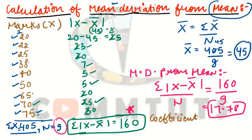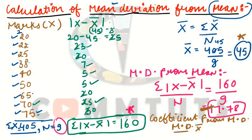Now how do we calculate the coefficient of mean deviation from mean? The formula is: coefficient of MD from mean = mean deviation from mean divided by x-bar. So that is MD divided by x-bar: 17.78 divided by 45 equals 0.39. So the coefficient of mean deviation from mean is 0.39.